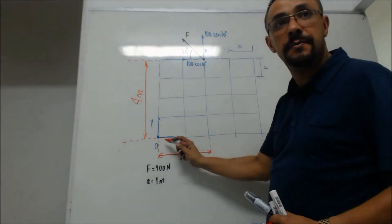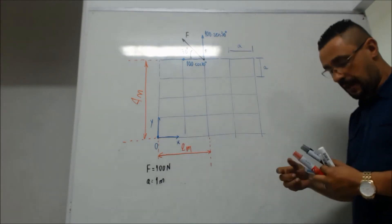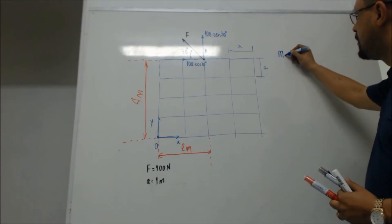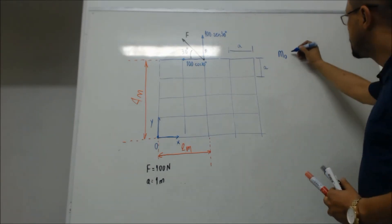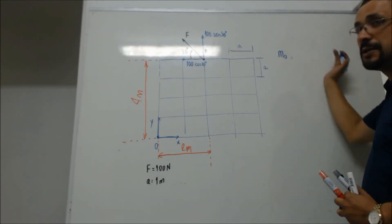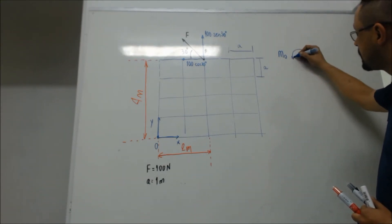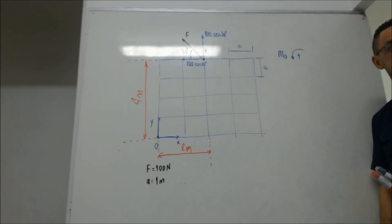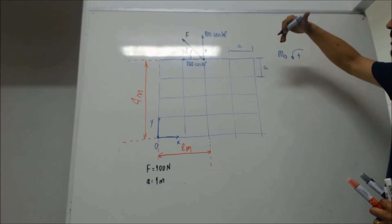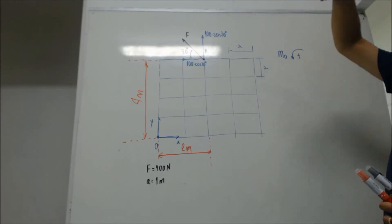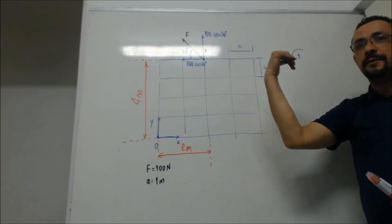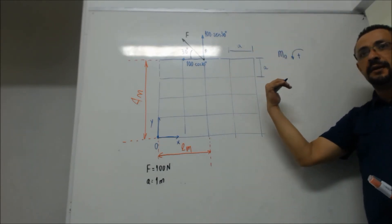Quero fazer um momento em relação a O. O que vai ficar? Momento em relação a O — eu vou usar a regra da mão direita. O que diz a regra da mão direita? Se a força girar no sentido anti-horário, ela vai ser positiva. Porque fazendo esse giro aqui, o polegar está saindo. Quer dizer que é positivo. Eixo Z positivo. Se for o contrário, eixo Z negativo.